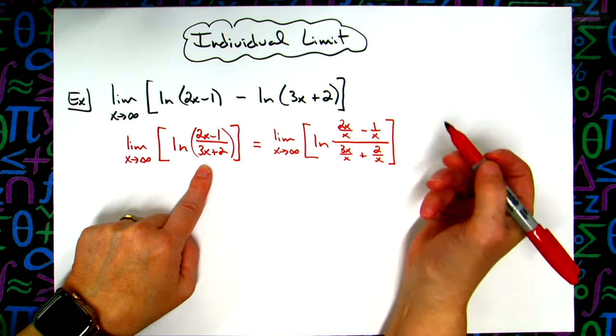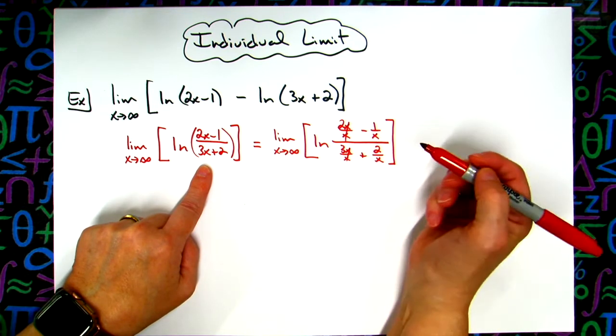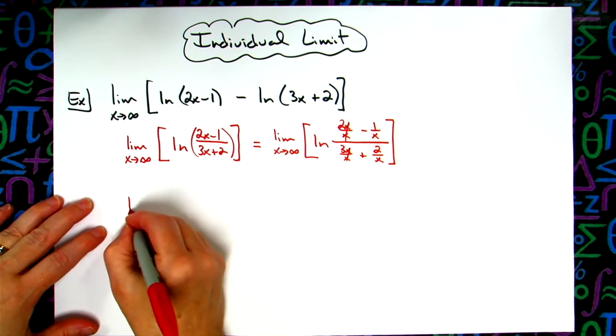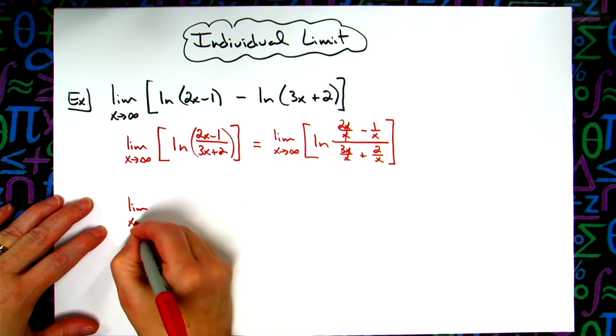Alright, now we're going to do some simplifying here. The x's will cross out. So then my next line is going to be the limit as x approaches infinity.